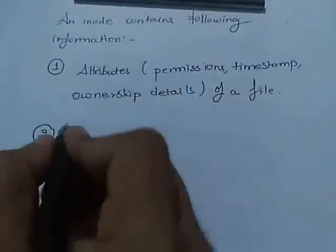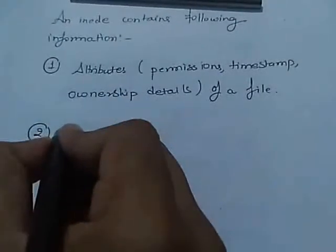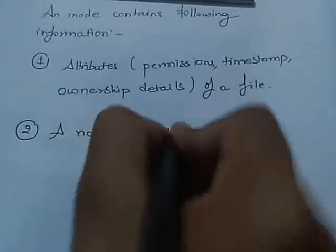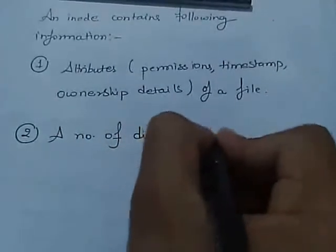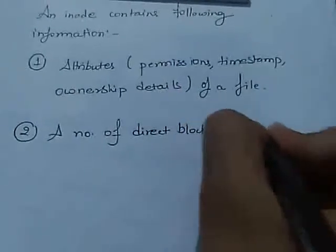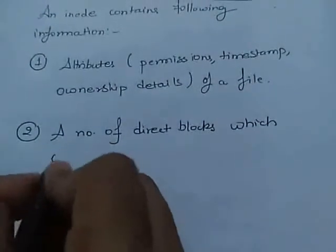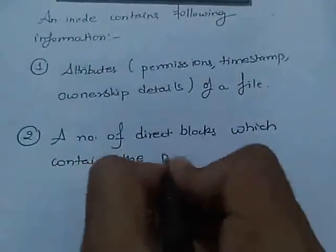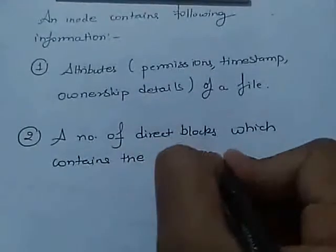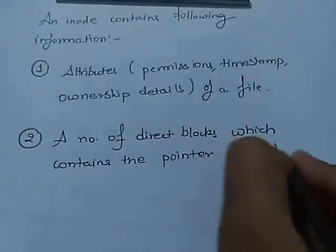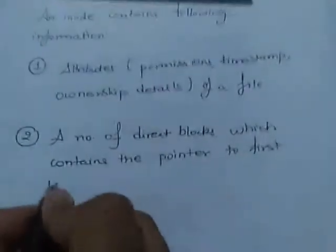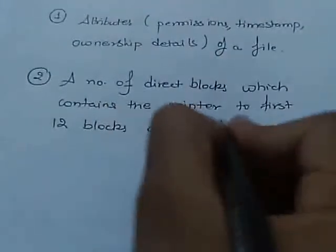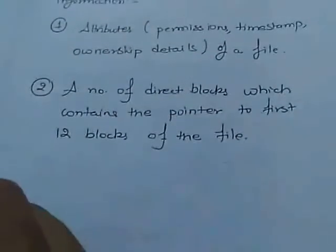The second thing we have is direct blocks. A number of direct blocks contain pointers to the first 12 blocks of the file.